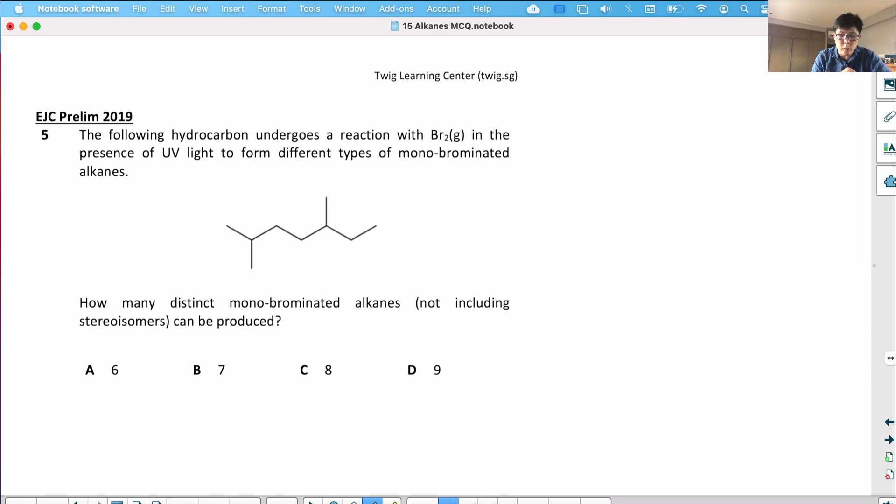Okay, how many distinct monobrominated alkanes can be formed? Let's see. There's a CH3 here and then the CH3 here, and these two are attached to the same carbon. In fact, any of these hydrogens can be replaced with a Br.